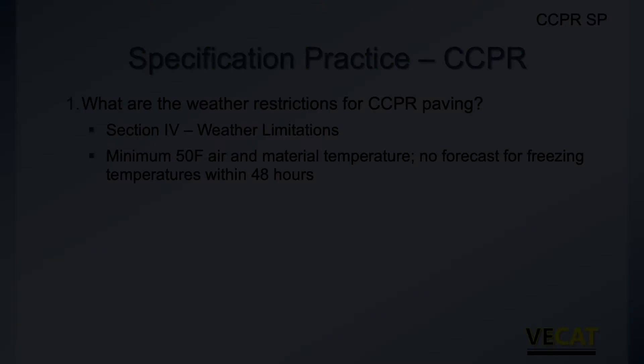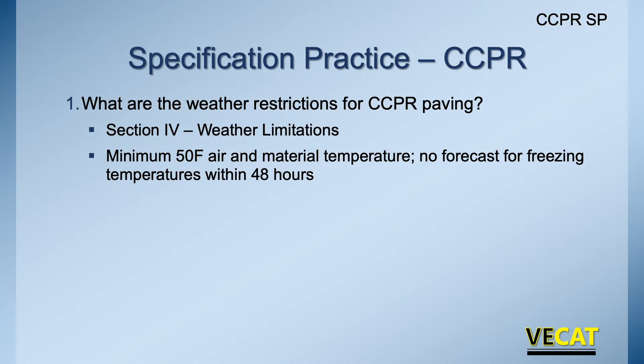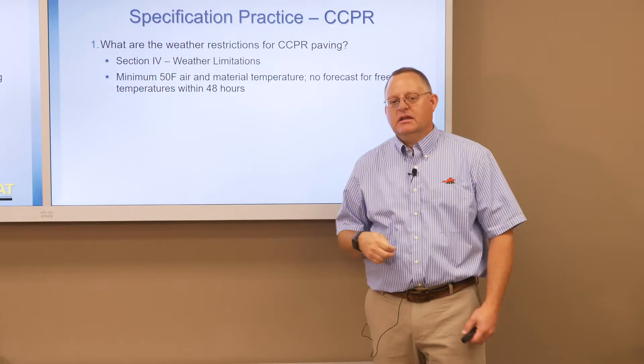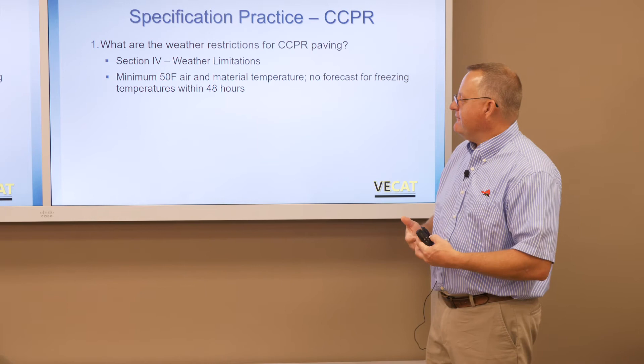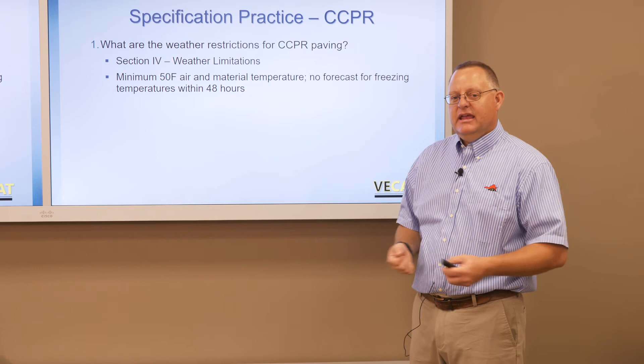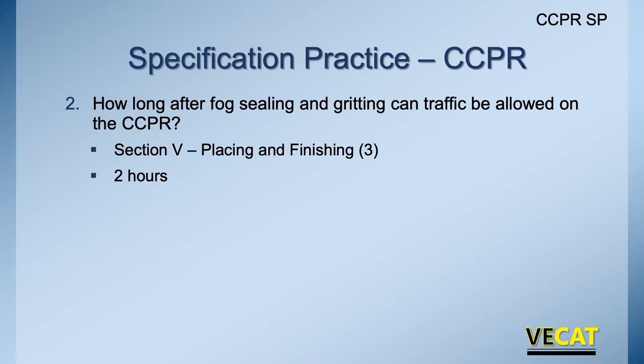For weather restrictions, Section 4 specifies a minimum of 50 degrees for both air and material temperature, with no freezing temperatures predicted for 48 hours. That material needs heat — 50 degrees — and the surrounding air must be warm because cold air will draw heat out of the material. We don't want any freezing within 48 hours, especially since adding moisture for compaction aid will expand when frozen and break those bonds.